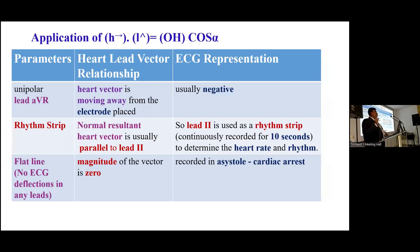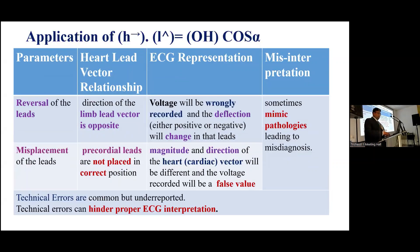For example, unipolar AVR is usually negative because the heart vector is moving away from the electrode, making the cosine value negative. Normally Lead 2 is the rhythm strip because the normal descent of heart vector is usually parallel to Lead 2. If the magnitude vector is zero, flat line — no ECG deflections are seen. Regarding reversal of leads: if the direction of the limb lead vector is in the opposite direction, the voltage will be wrongly recorded. If precordial limb leads are not kept in the proper position, the magnitude and direction of the heart vector will be different and the voltage recorded will be a false value. Technical errors are common but an under-reported problem and can hinder proper ECG interpretation, sometimes mimicking pathologies and leading to misdiagnosis.